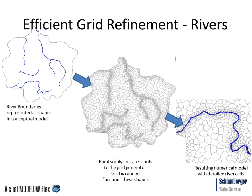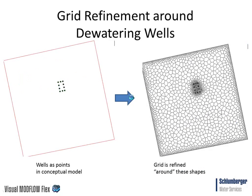For example, with a river boundary condition represented as a polyline shapefile in the conceptual model, after generating the unstructured grid you can see nice level refinements around those river polylines. After conversion, you see the corresponding cell representation of the river cells in the numerical model. Similarly, for a dewatering project with wells as points in your conceptual model, you specify the target cell size around those wells and the grid generator creates the corresponding cell representation honoring those constraints, with a gradual smoothing outwards. You can also refine along the edges of the model extent with a specified refinement factor.